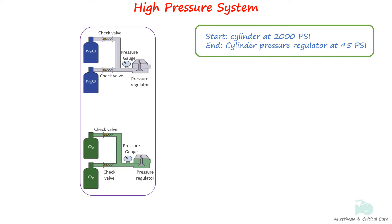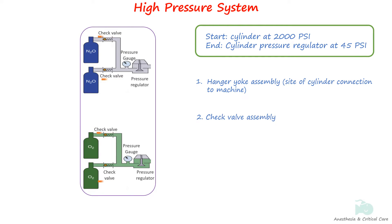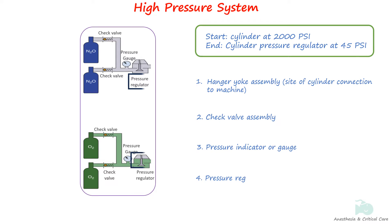The high-pressure system consists of a hanger yoke assembly, check valves, pressure indicator or gauge, and pressure regulators. The high-pressure system is usually not used unless the pipeline supply is unavailable.